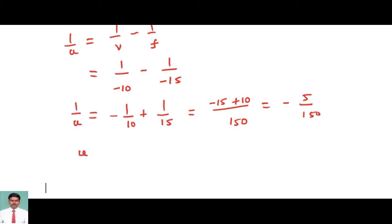So if you take the reciprocal, U is equal to -150/5, that will be minus 30 cm. Minus 30 represents the concave lens. Minus 30 means the object is placed at a distance of 30 cm from the optic center to the left.